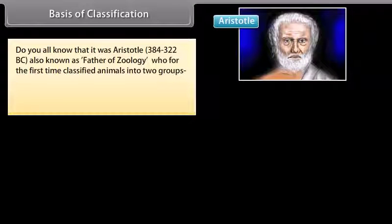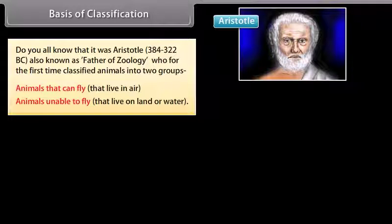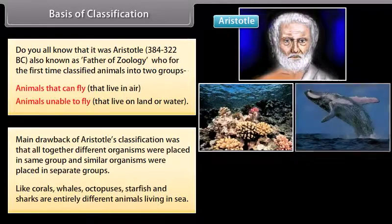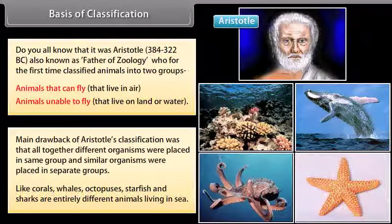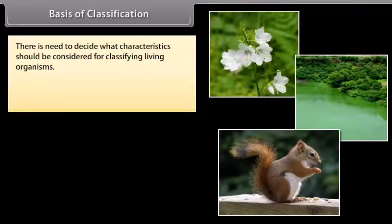It was Aristotle (384–322 BC), also known as father of zoology, who for the first time classified animals into two groups: animals that can fly and live in air, and animals unable to fly that live on land or water. The main drawback of Aristotle's classification was that altogether different organisms were placed in the same group and similar organisms were placed in separate groups — like corals, whales, octopuses, starfish and sharks are entirely different animals living in sea. So there is a need to decide what characteristics should be considered for classifying living organisms.